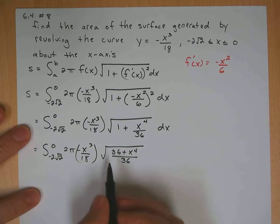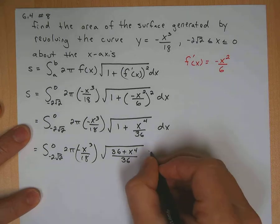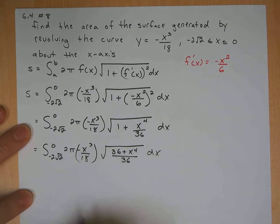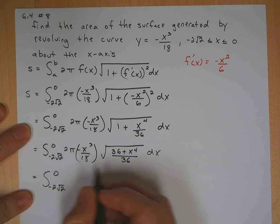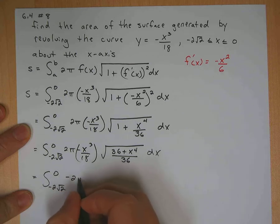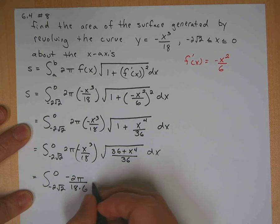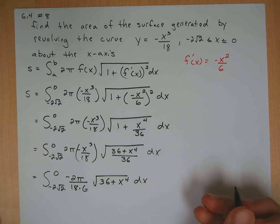Okay, so this 36 is a perfect square. So I can go ahead and square root the denominator there and bring it out. It would be a 6 when I bring it out. And I could also bring this 18 over with that 2. So you would get negative 2 square root 2 to 0. Here's my negative 2 pi over 18. Here's the 18. Now, this 6 is also going to be here as well. And that would leave a square root of 36 plus x to the 4th dx.